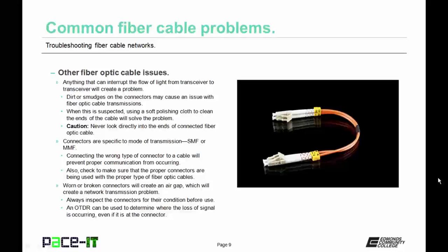Connectors are also specific to the mode of transmission, as in SMF or MMF. Connecting the wrong type of connector to a cable will prevent proper communication from occurring, so always check that the proper connectors are being used with the proper type of fiber optic cables. Worn or broken connectors will create an air gap, which will create a network transmission problem. Always inspect the connectors for their condition before use. An OTDR can be used to determine where the loss of signal is occurring, even if it is at the connector.